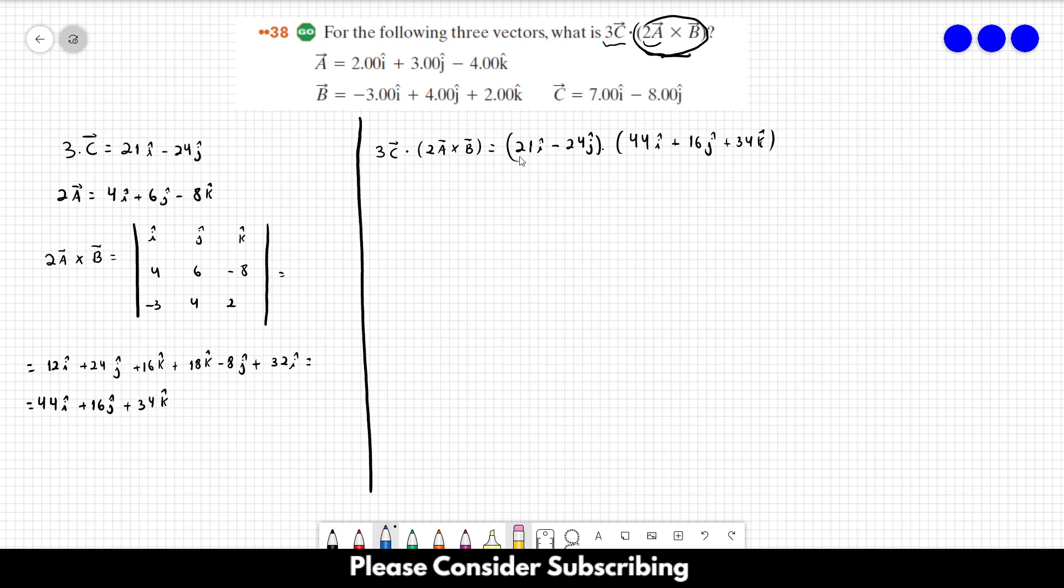Since you don't have K over here, you can just forget about this K over there. So this would be 21 times 44 minus 24 times 16.